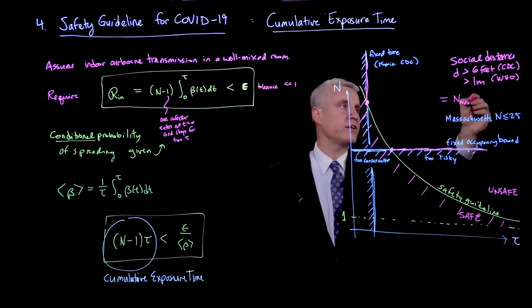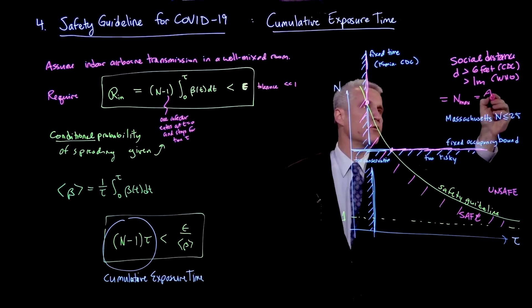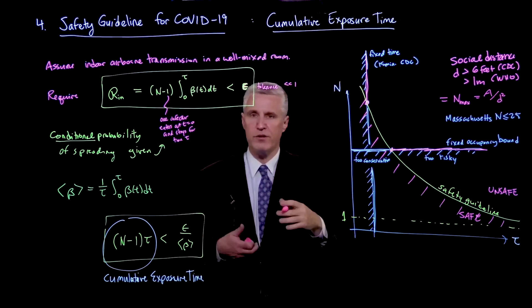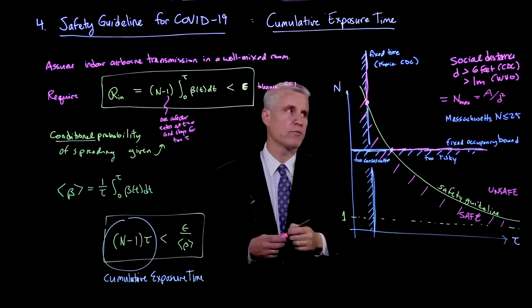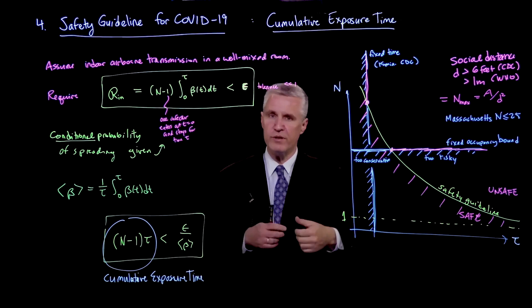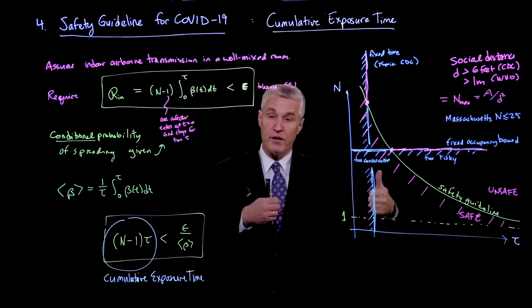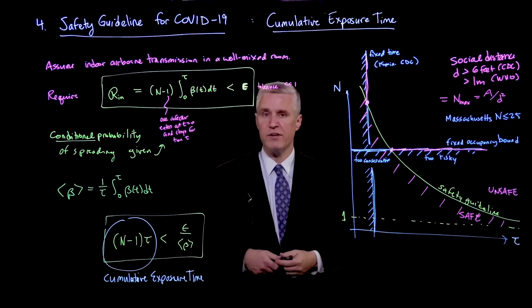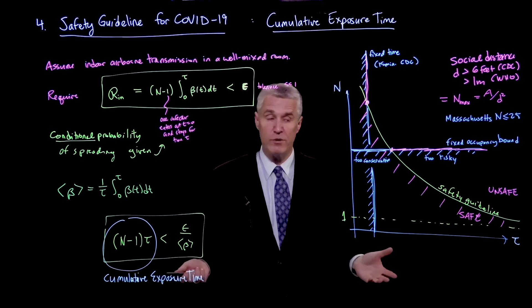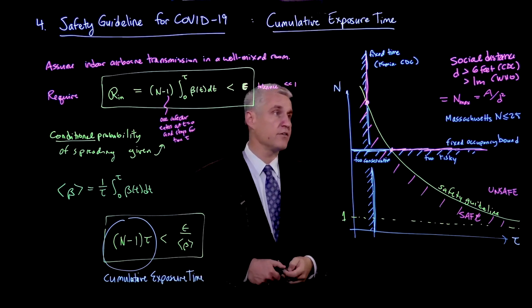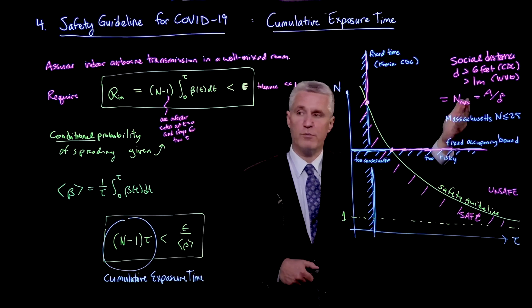Which is the area of the room divided by d squared or by some other factor, depending how you think people are going to be arranged. But basically, you go into the room, you map out that spacing, and you arrive at a fixed occupancy. This is being done everywhere, including here at MIT right now. And that still leads to fixed occupancy.